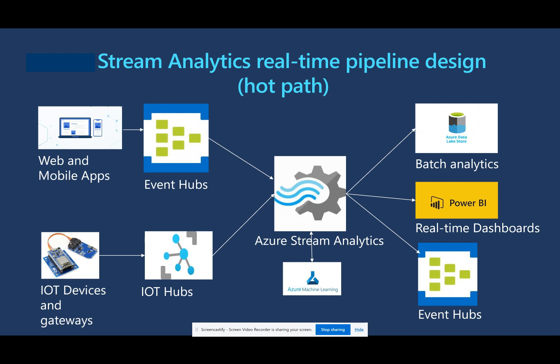The input can also be an IoT Hub. IoT Hub receives the data from various IoT sensors and IoT devices. Azure Stream Analytics consumes the data from the IoT Hub, and then it can write to the Data Lake Store or Cosmos database, directly publish real-time analytics reports, or write to another Event Hub.